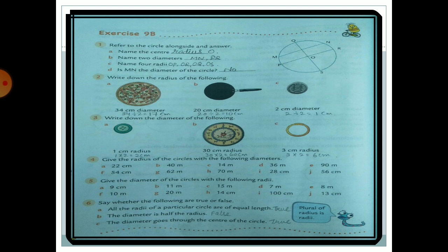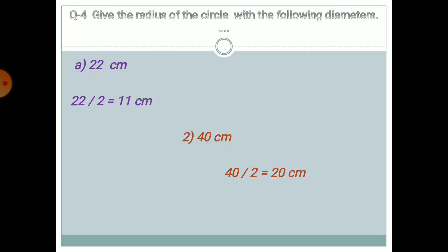Question 4: Give the radius of circles with the following diameters. To find the radius, divide by 2. A: 22 cm → 22 ÷ 2 = 11 cm. B: 40 cm → 40 ÷ 2 = 20 cm. Questions C through J you should attempt on your own.